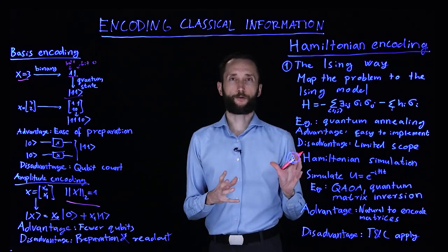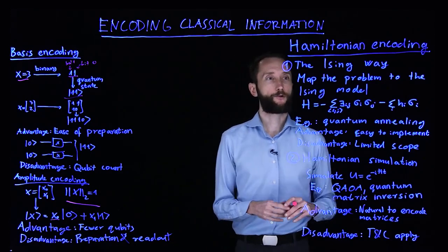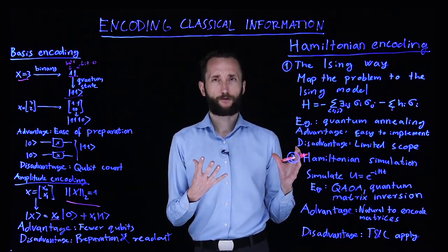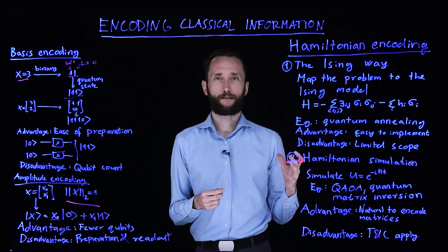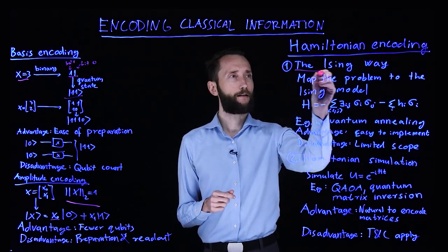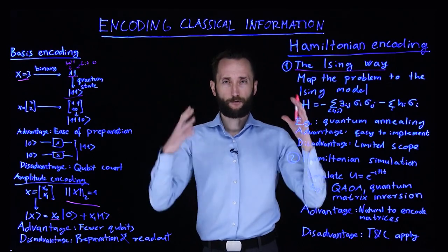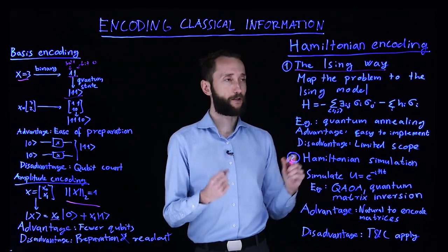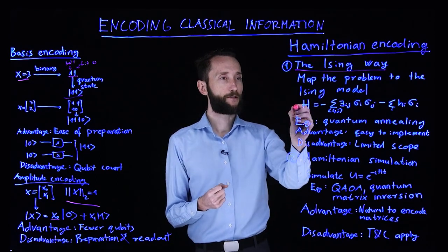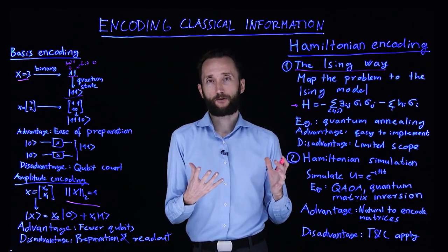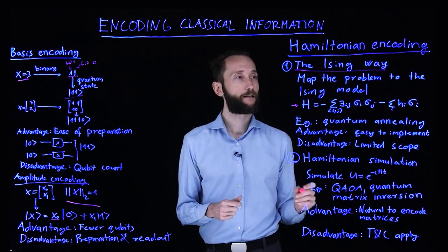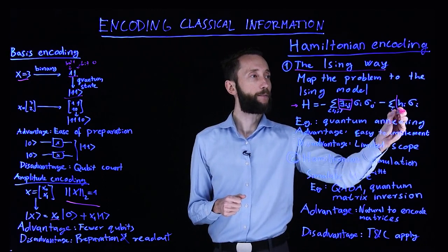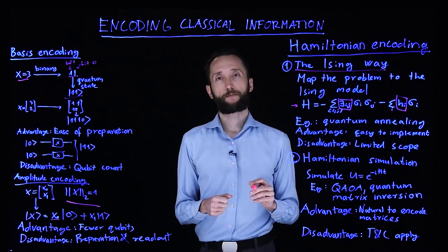Then we can also encode the problem in a Hamiltonian. When you think about it, there are actually two ways of doing this. One is that we have seen over and over again. This is the Ising way. You have a problem, you map it to the Ising model or a quadratic unconstrained binary optimization problem, which is given in this form. And that's what you saw, for instance, by quantum annealing. So the encoding comes in in these couplings and these bias terms. These are the ones expressing your problem.